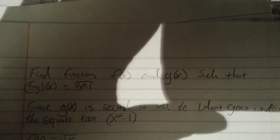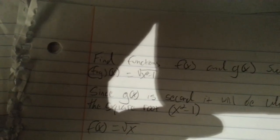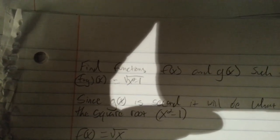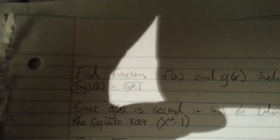Asked to find functions f of x and g of x such that f of g(x) is equal to the square root of x squared minus 1.